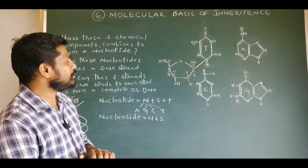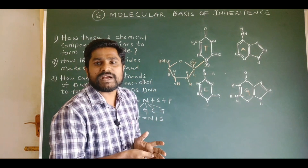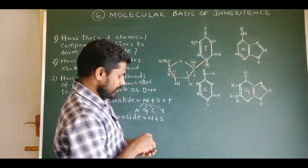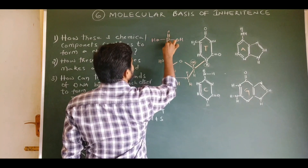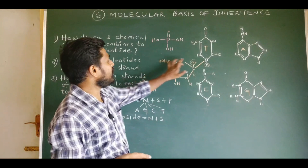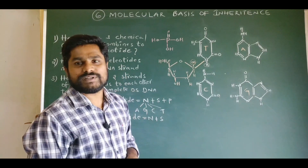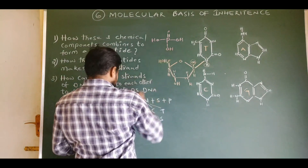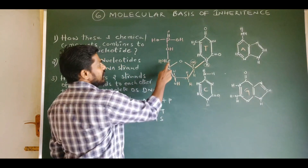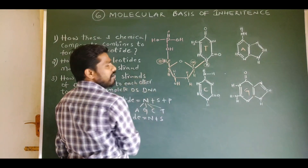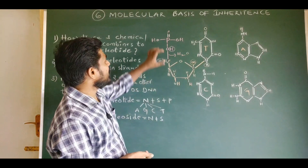To complete the structure of a nucleotide, it must have a phosphate group. This phosphate group binds with the fifth carbon of the pentose sugar by means of a phosphoester bond, releasing one molecule of water. The hydroxyl group of the fifth carbon and a hydrogen of the phosphate group are released in the form of water to make the phosphoester bond.